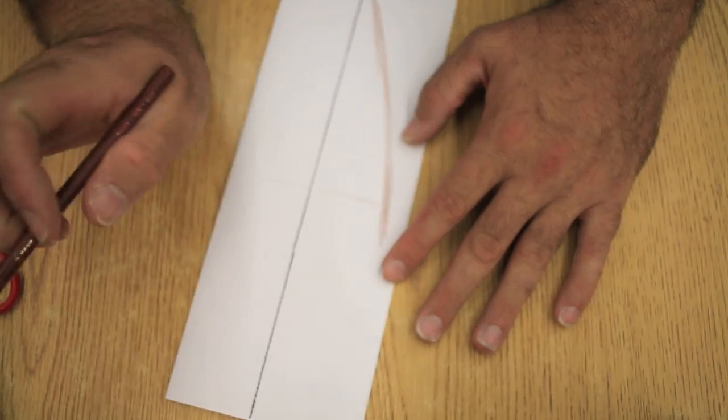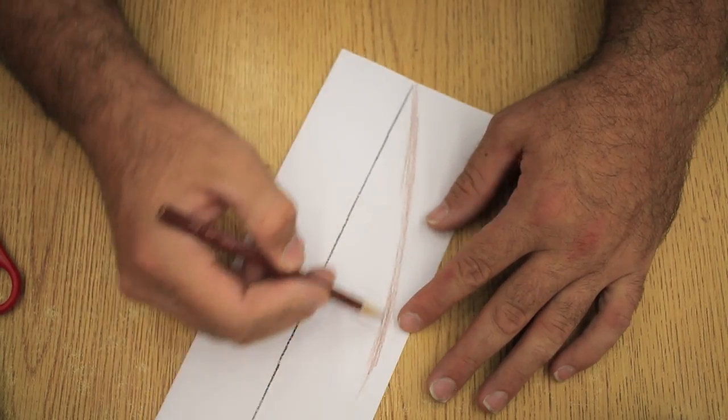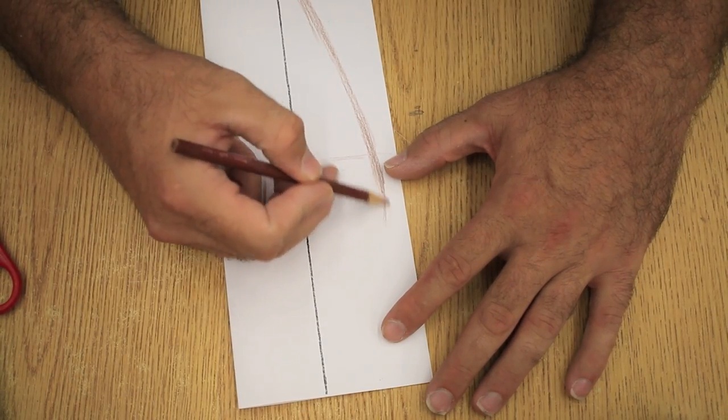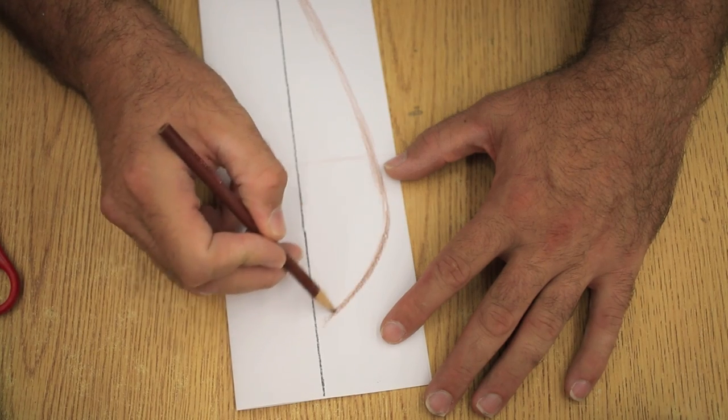Once I get past that shoulder, then I can work on some nice curves. But we need this down here to be sort of straightish for strength. I'm going to work on a nice beautiful curve.